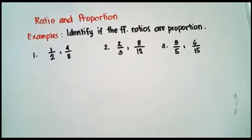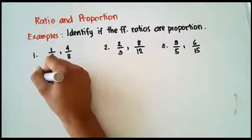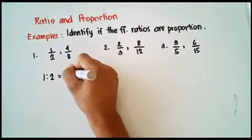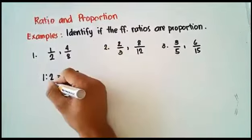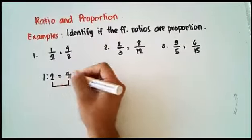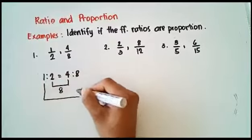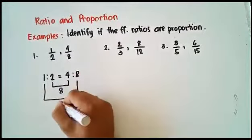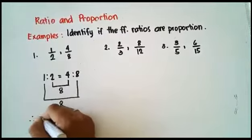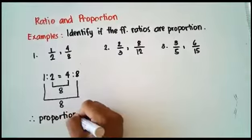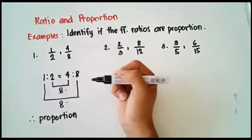Examples: identify if the following ratios are proportioned. For number one, we have 1/2 and 4/8. We write this as 1 is to 2 is equal to 4 is to 8. Let us check: multiply the means — 2 times 4 is 8. For our extremes, 1 times 8 is 8. Therefore, it is proportioned because the product of the means equals the product of the extremes.